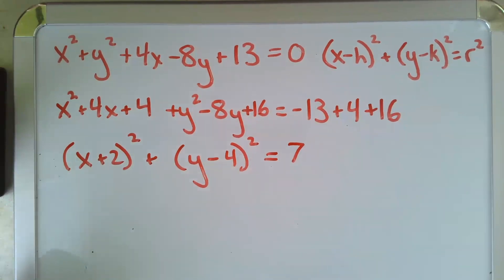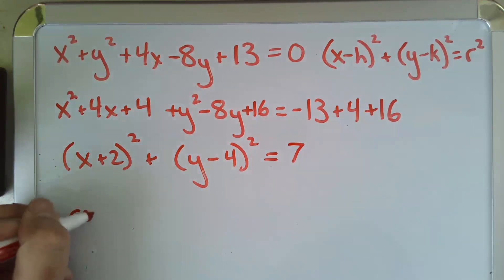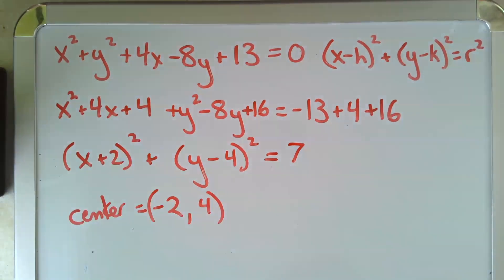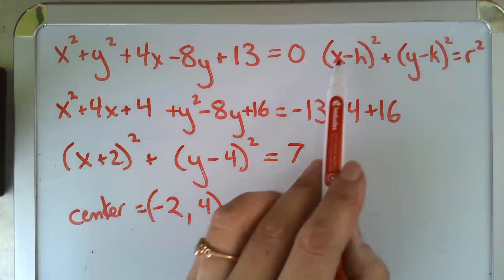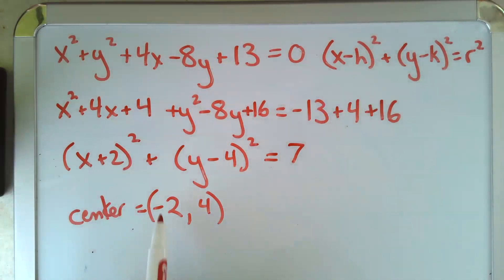we have a center of h comma k. So a center of negative 2 comma 4. Okay. Notice x plus 2, but my formula says x minus h. So if h is negative 2,